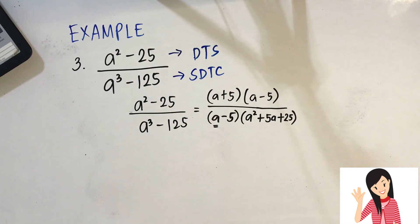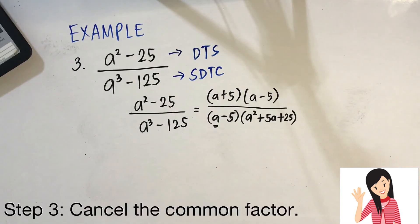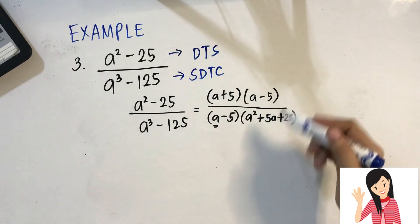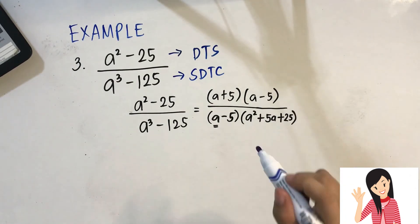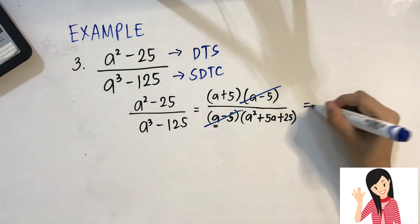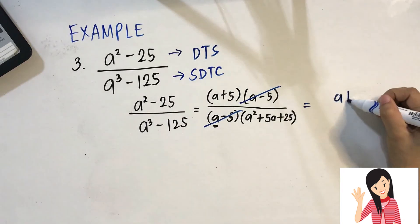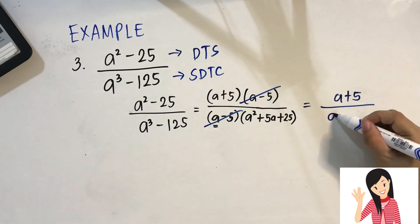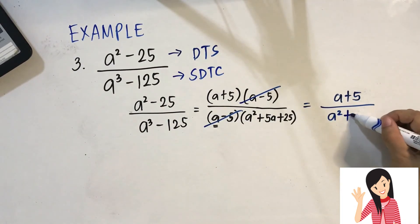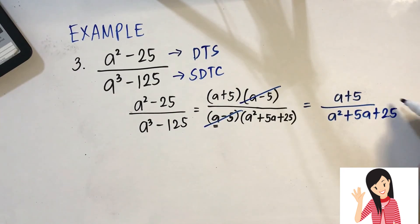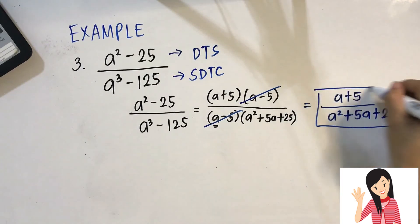Now for the third step, cancel all common factors. Comparing numerator and denominator, they share (a − 5). Cancel it out. We are left with (a + 5) in the numerator over (a² + 5a + 25) in the denominator. Since the trinomial cannot be factored further, this is our final answer.